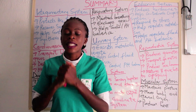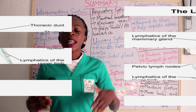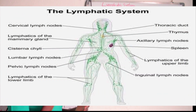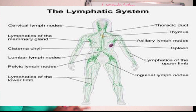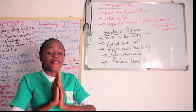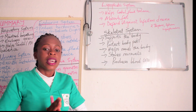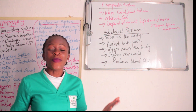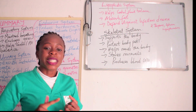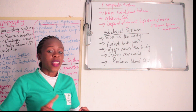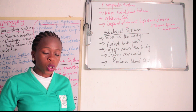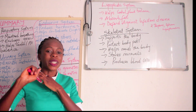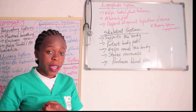The lymphatic system helps to control fluid balance, absorbs fats, and helps to defend against infectious diseases. The organs that make up the lymphatic system include your thymus gland, your spleen, and your lymph nodes.